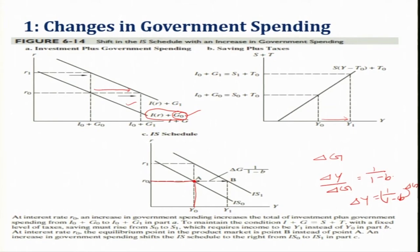Here you can see that when the rate of interest remains constant, when there is an increase in government spending, del Y will increase by 1/(1-B) times del G. That distance is this much — Y will be increasing this much, this is del Y. So the IS curve will be shifting rightwards if there is an increase in government expenditure.